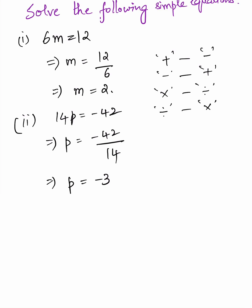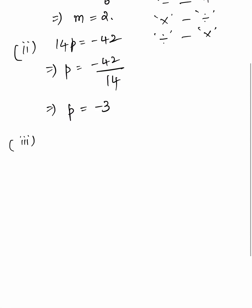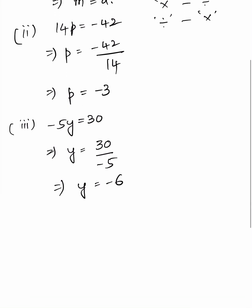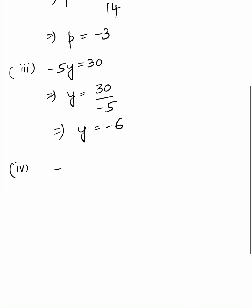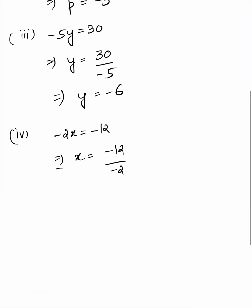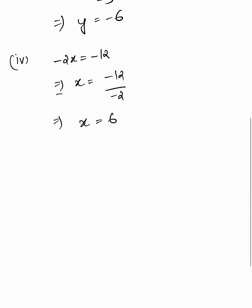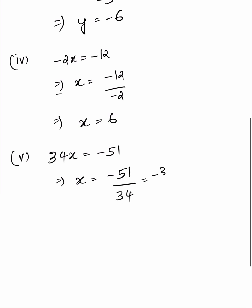Third: minus 5y equals 30, implies y equals 30 divided by minus 5, which equals minus 6. Fourth: minus 2x equals minus 12, implies x equals minus 12 divided by minus 2, which equals 6. Fifth: 34x equals minus 51, implies x equals minus 51 divided by 34, which equals minus 3 by 2.